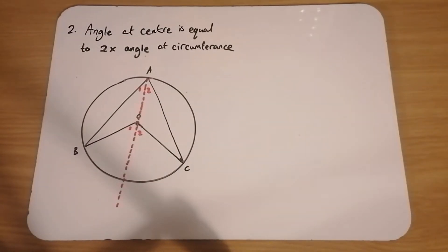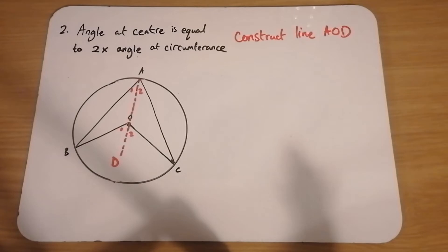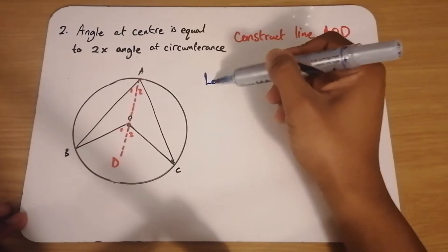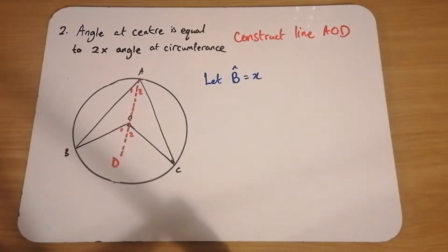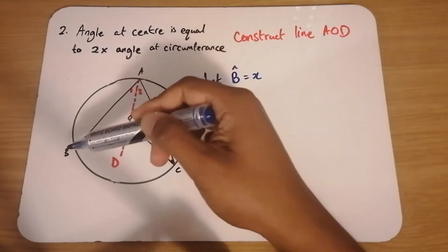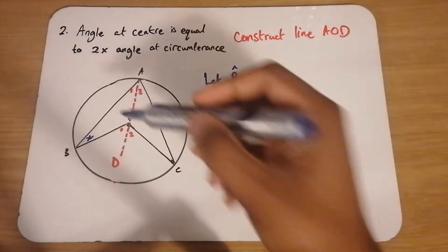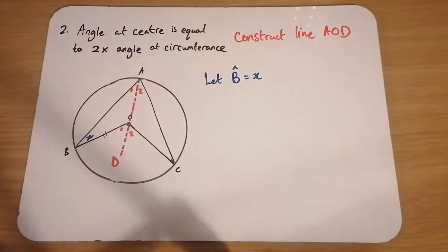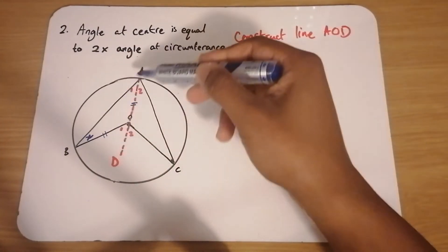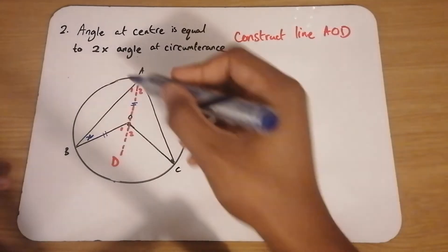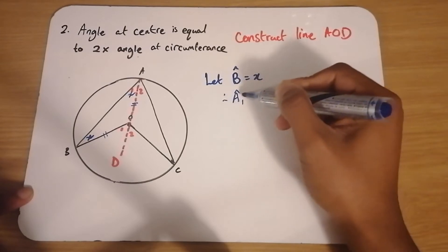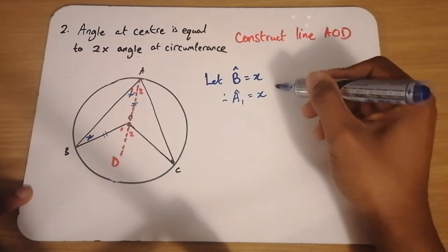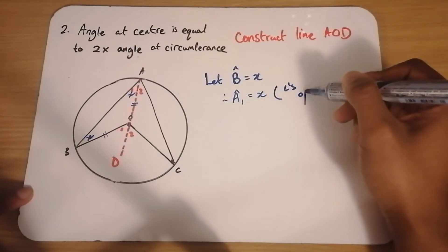Let angle B be equal to X. Now look at triangle A, O, B. In that triangle, OB is a radius and that is equal to line OA, which is also a radius. So we basically have an isosceles triangle, which means that angle A1 is also equal to X. Therefore A1 is also equal to X, because we have angles opposite equal sides.